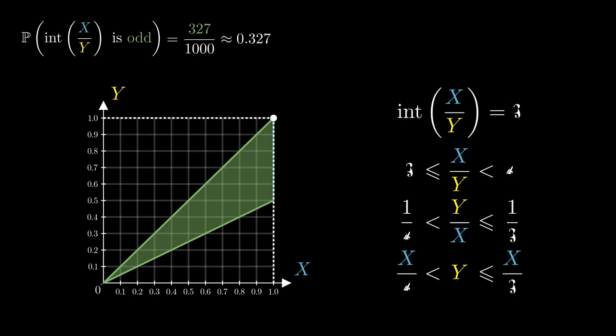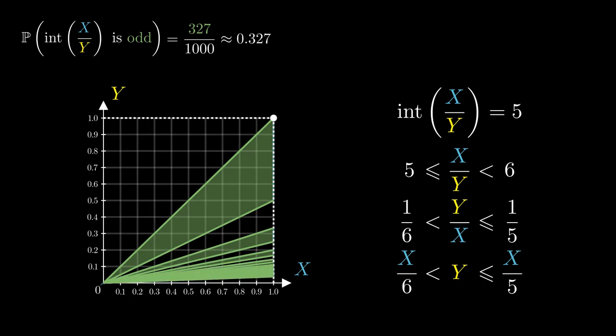But what happens when we consider the rounded off value to equal 3? Then we're going to draw the lines with gradient a third, and gradient a quarter respectively, and accept all the pairs of x and y that lie in this rather small triangle. But this works when the integer part is 5, 7, so on and so forth. The total probability therefore equals the total area of these infinitely many triangles.